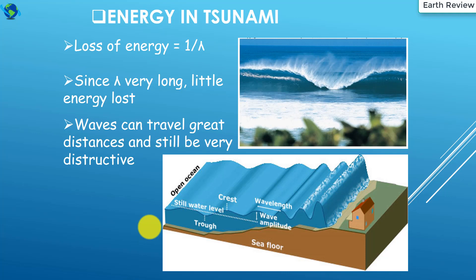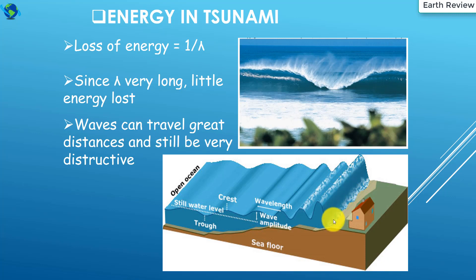A tsunami can be very powerful. Let's talk about the energy of a tsunami. The loss of energy equals one divided by lambda. Since lambda is very long, little energy is lost, so waves can travel great distances and still be very destructive. You can see in the lower image — this is the open sea where a tsunami may occur, and the destructive effect you may understand from this illustration.